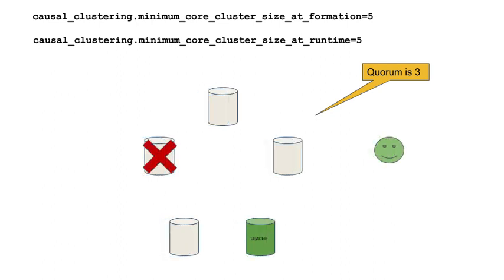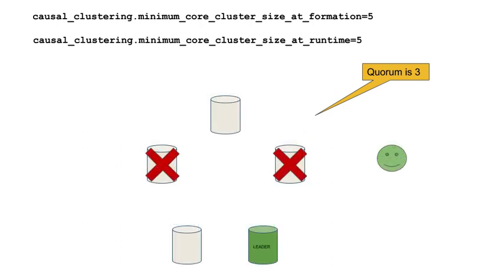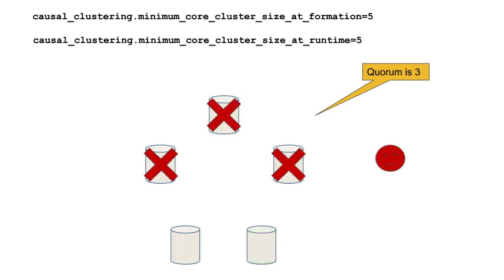If one of the core servers shuts down, the cluster is still operable because at least three core servers are running. If a second core server shuts down, the cluster is still operable because at least three core servers are running. If a third core server shuts down, quorum has been lost and the cluster is not operable for updates and no leader can be elected. At this point, at least one of the core servers that were originally part of the cluster must be restarted if the cluster will be operable again.